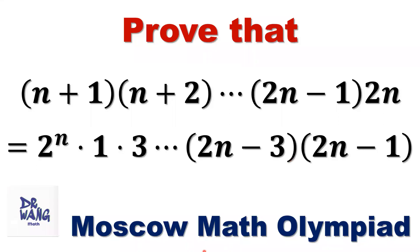Hello everyone, I'm Dr. N. Here I ask the question: prove that (n+1)(n+2)···(2n-1)(2n) equals 2 to the power of n times 1 times 3 times ··· times (2n-3) times (2n-1).